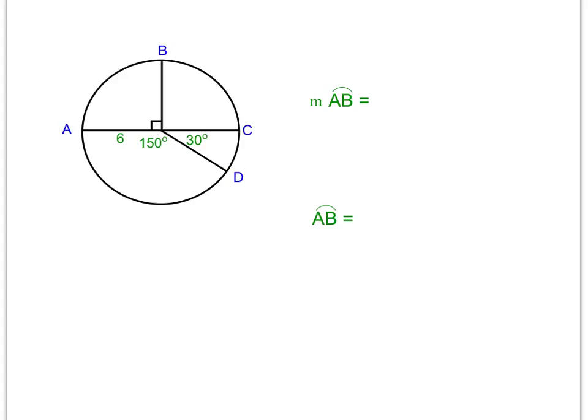This part asks us for the measure of arc AB and the arc length of AB, which we already solved. Looking back at the earlier work: the measure of arc AB is 90 degrees and the arc length of AB is 3π.